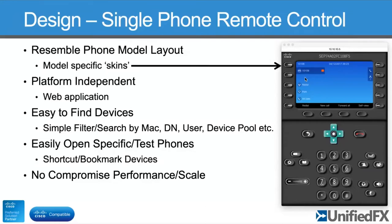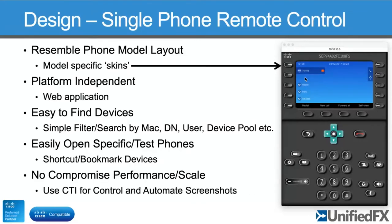At the simplest level you can create bookmarkable URLs to jump straight back to the same device, enabling integration with other applications. There's no compromise on performance or scale. We use CTI to control the phones, combined with a unique technique for automating screenshots. Other tools often use a timing mechanism — polling every two or three seconds — but our approach delivers optimal performance for every phone model, as fast as the phone will provide the image.